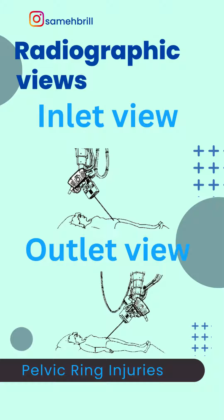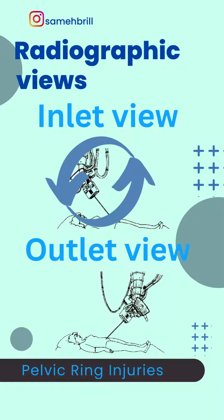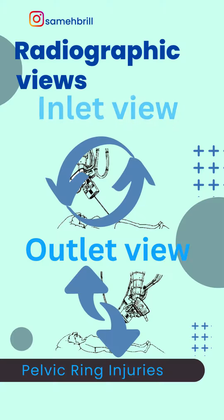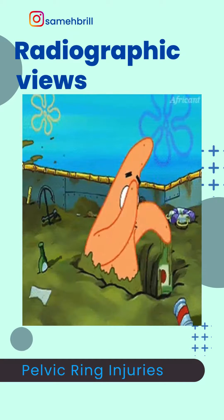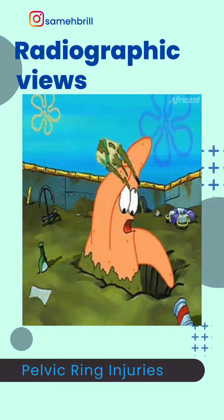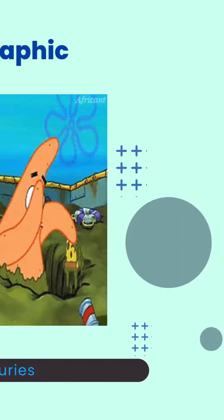The inlet view is mainly required to assess anterior and posterior translation, while the outlet view is mainly required to assess vertical displacement of the pelvis. Now let's dig deeper into those two additional radiographic views.